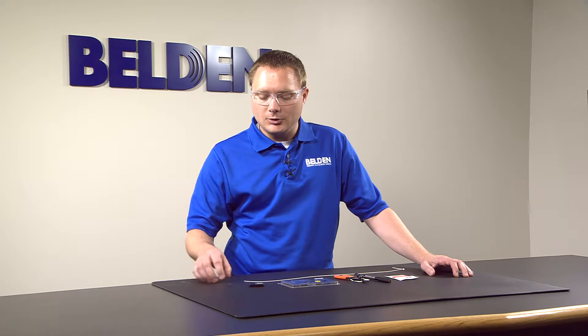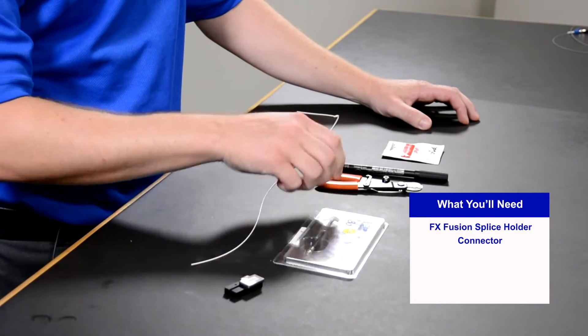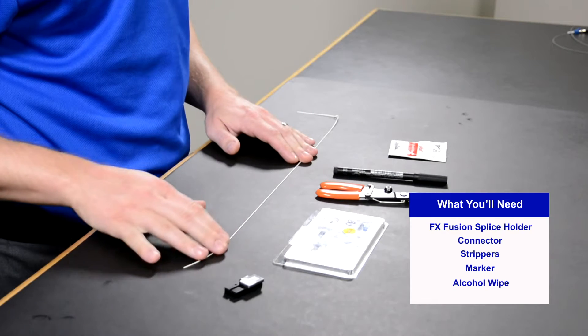For this step, you will need your FX Fusion splice holder, your connector, strippers, a marker, an alcohol wipe, and your fiber.